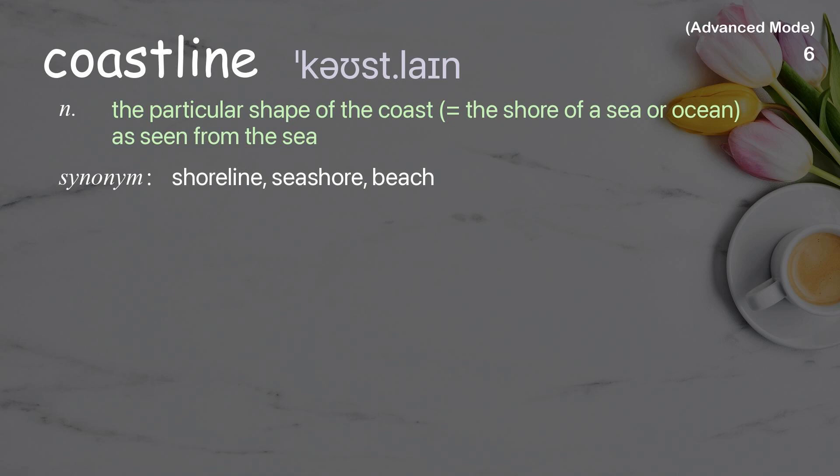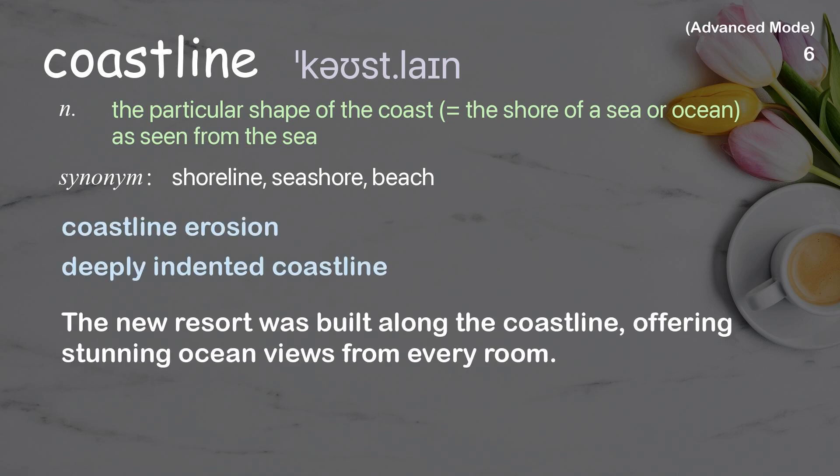Coastline: The particular shape of the coast — the shore of a sea or ocean, as seen from the sea. Examples: coastline erosion, deeply indented coastline. The new resort was built along the coastline, offering stunning ocean views from every room.